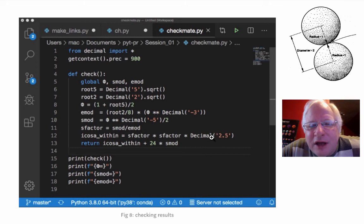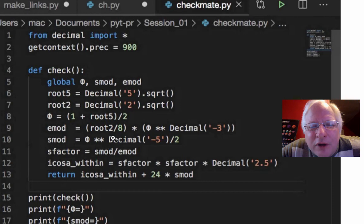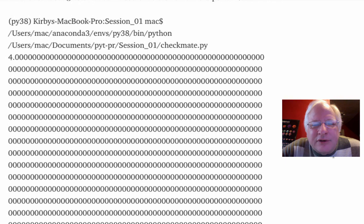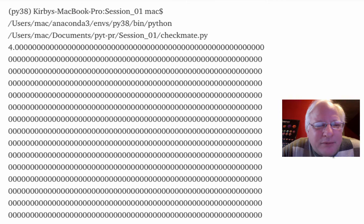Again, reminding you that this is one of those IVM balls with E modules. We apply the S factor, and we want to make sure that the S factor times the S factor times the decimal 2.5 is going to equal, once we add in the icosahedron, so the icosahedron within, the one inside the octahedron, we're going to obtain that from the inner cube octahedron by multiplying by the S factor twice. And then we're going to add to that icosahedron within, now that we've obtained it, we're going to add the 24S modules and see how close we come to 4. Because 4 is the total volume then of the cube octahedron, excuse me, the octahedron.